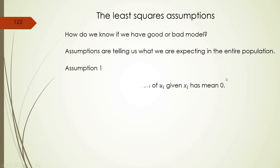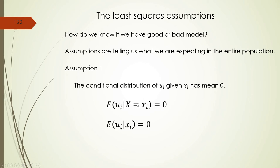The first assumption is that the conditional distribution of U given X has mean zero. What it actually means is that for any given value of X, the distribution of residuals for that value of X is on average zero. For example, if we have 60 observations for X equal to five, every one of these 60 observations has a residual, and on average these residuals need to be zero.